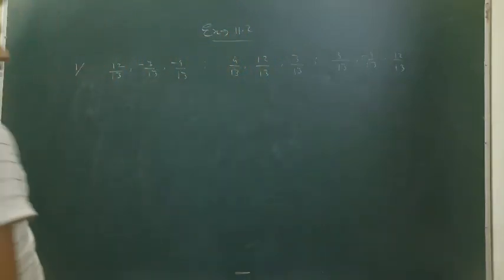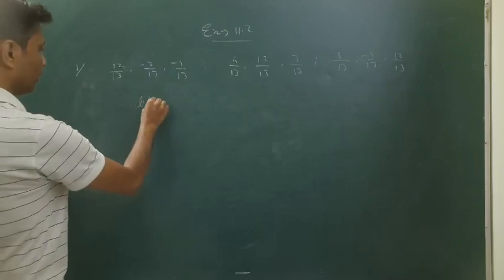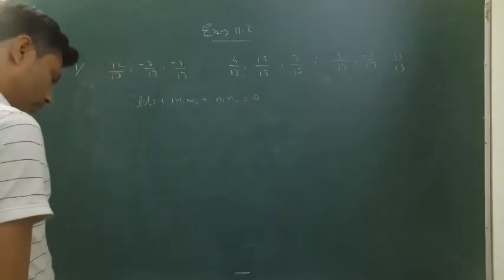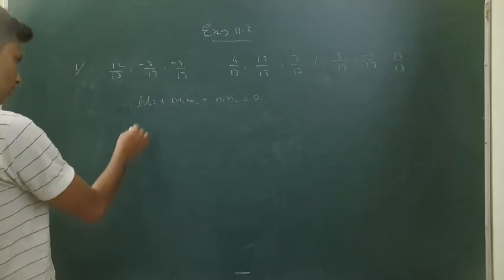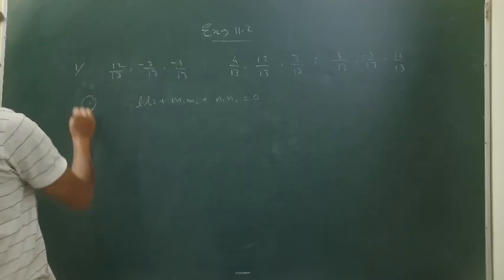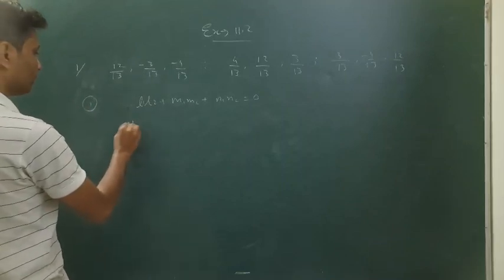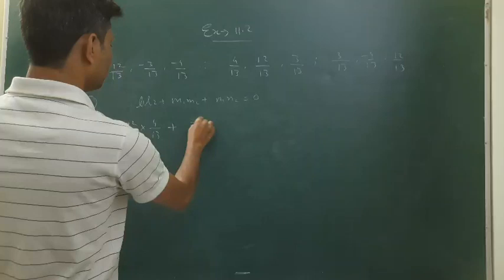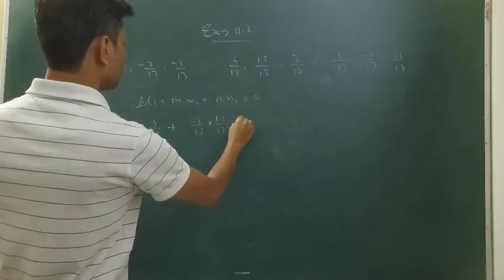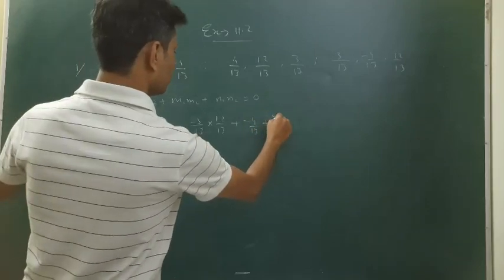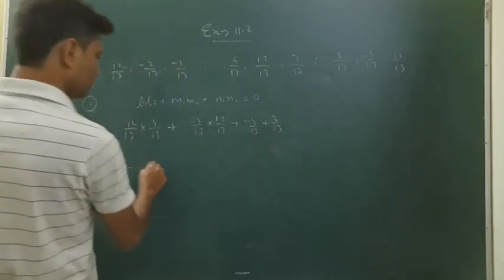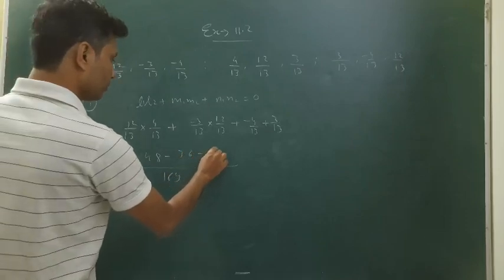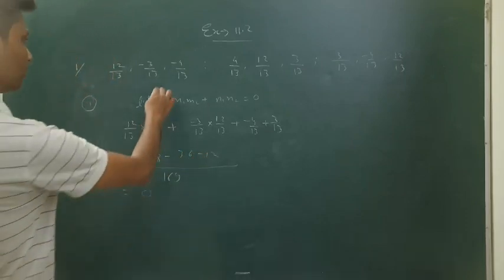The formula for perpendicularity is l1*l2 + m1*m2 + n1*n2 = 0. For the first condition, checking lines 1 and 2: (12/13)*(4/13) + (-3/13)*(12/13) + (-4/13)*(3/13). This equals 48/169 - 36/169 - 12/169 = 0. That means they are perpendicular.